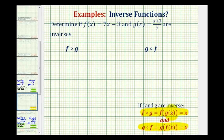Notice here the initial input into g is x, and the final output of the composite function is also x. The input and the output are the same because the two functions undo each other in this direction. And also for g of f of x, the initial input into f is x, and the final output of the composite function is also x, again verifying that the two functions will undo each other because the initial input and the final output are both the same.